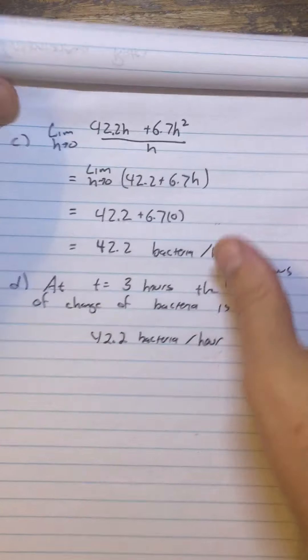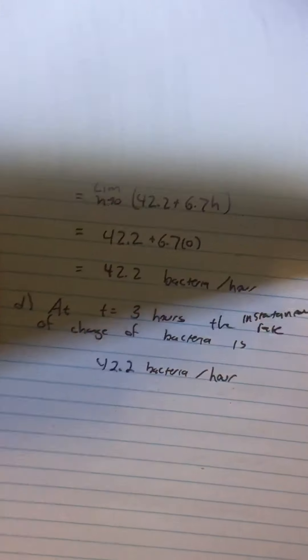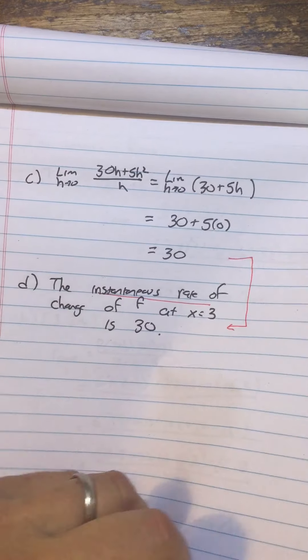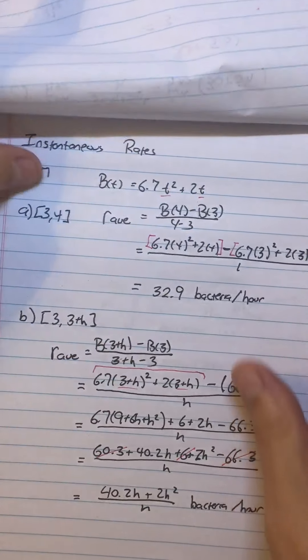So once you can follow this four-step process to find an instantaneous rate of change, we've been looking specifically at the point 3.